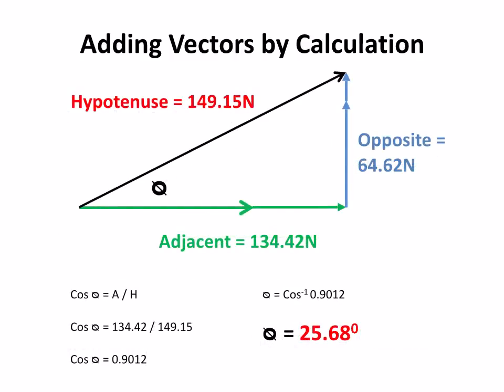We can find the angle using cosine. We know the adjacent, we know the hypotenuse. We know the cosine of the angle is the adjacent over the hypotenuse. So 134.42 divided by 149.15 gives me just over 0.9.